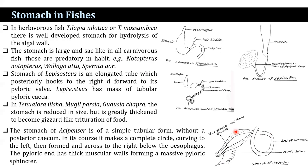Not all fish species possess a true stomach; it is absent in a number of species, including the Cyprinidae. The stomach varies depending on the food and feeding habits of the species.